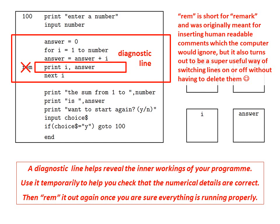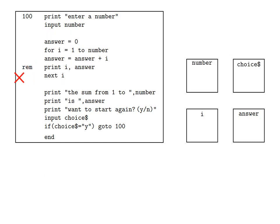Use it temporarily to help you check that the numerical details are correct, then REM it out again once you're sure everything is running properly. So let's try running this program again with the line un-REMed. This time we should try to keep track of the contents of the memory locations, which at the start are all set to zero, except for choice$, which being a string variable is set to blank.